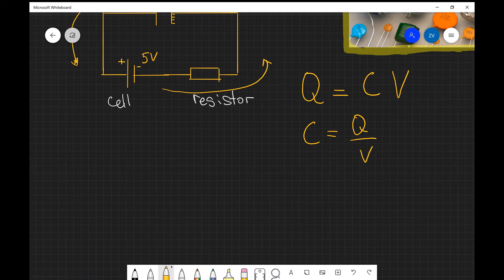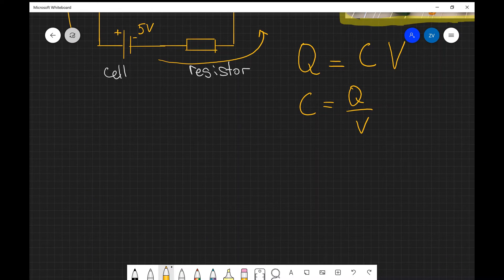The unit for capacitance is known as the farad. Fundamentally, this is a coulomb per volt.